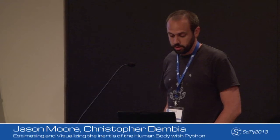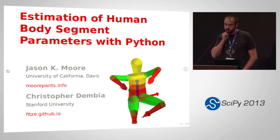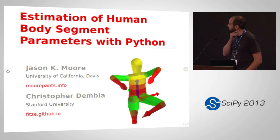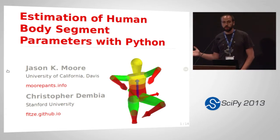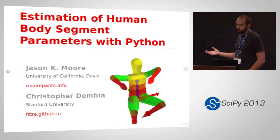Thanks for coming. My name is Jason Moore. I'm at the University of California Davis, but not much for longer. This is a small package that we put together one summer with the intern in my lab, Chris Dembia. He's now at Stanford University doing walking dynamics. I'm a dynamicist, biomechanics, and control engineer, and we often need to know what the inertia parameters of humans are.